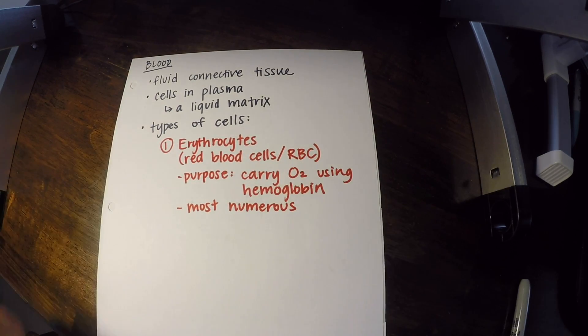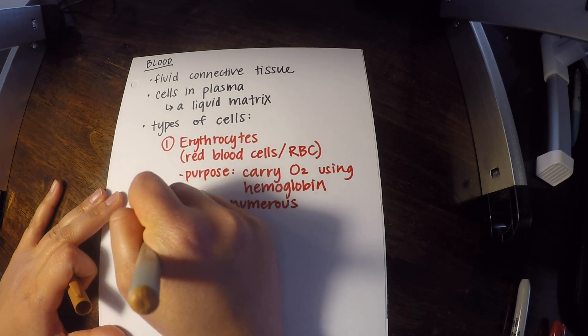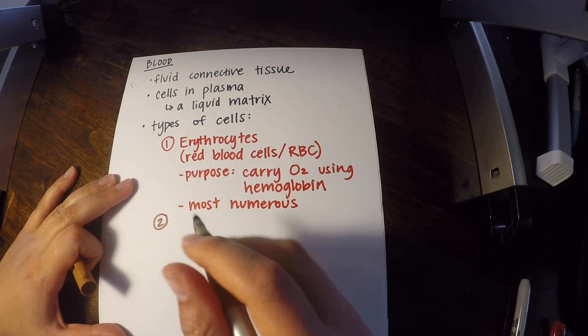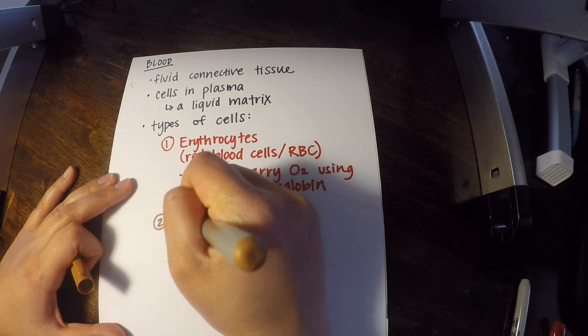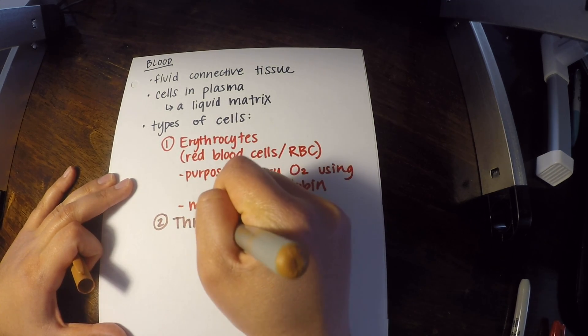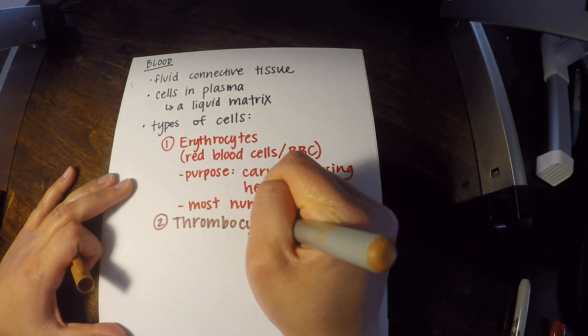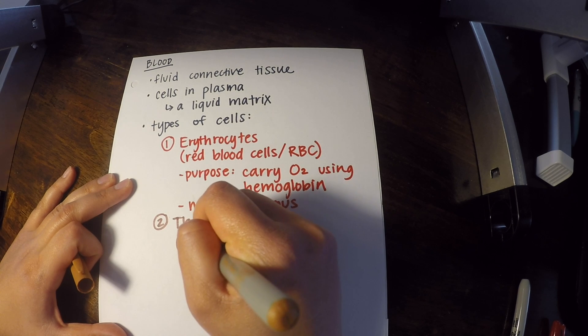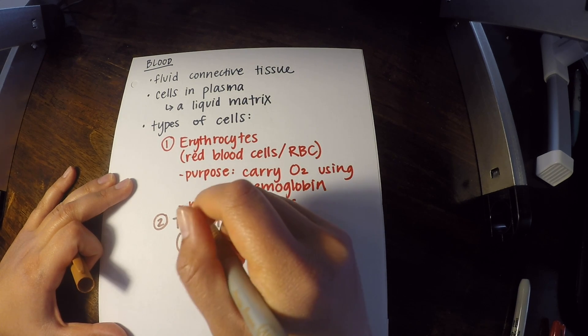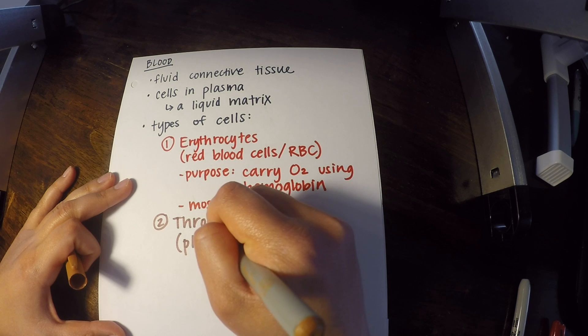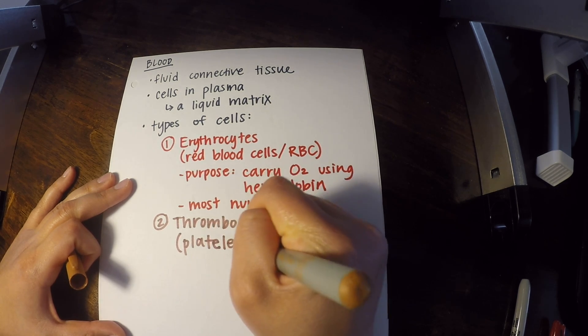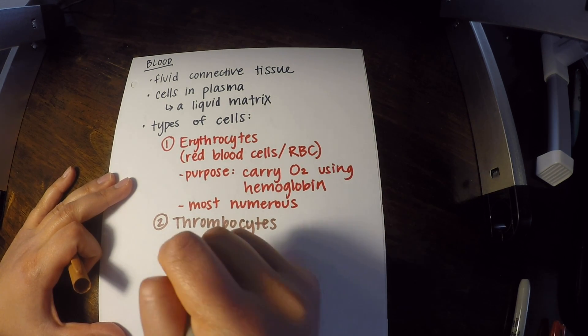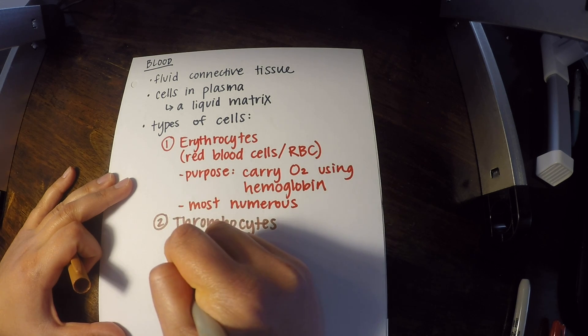Alright, that's our first type of cell. Our second type of cell, which is actually the second most numerous, are thrombocytes. And that's a fancy name for platelets.